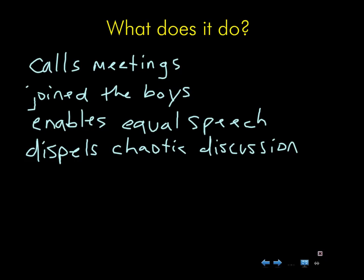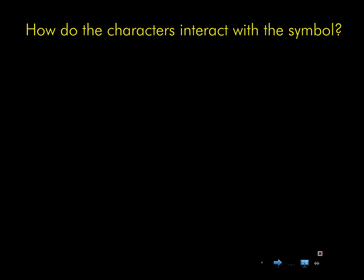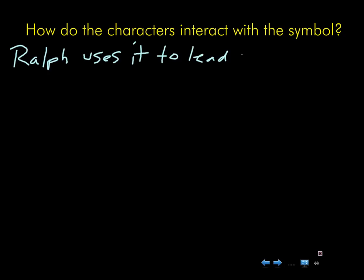I don't see anybody looking in their book to find the pages on which he describes it. We need that for the fourth question — what does it look like? How does he describe it? Think about the different boys, individual characters, and how they interact with it differently. For how the characters interact with the symbol, Ralph uses it as a control device to control the crowd — Ralph uses it to lead meetings.